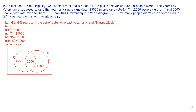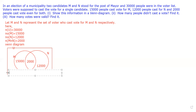Now, how many people did not cast a vote — that means the complement — we have to find. The total votes inside the diagram: 15,000 plus 2,000 plus 12,000 equals 29,000. Since altogether 30,000 must be there, the number outside is 1,000. So 1,000 people did not cast a vote — this is the complement.